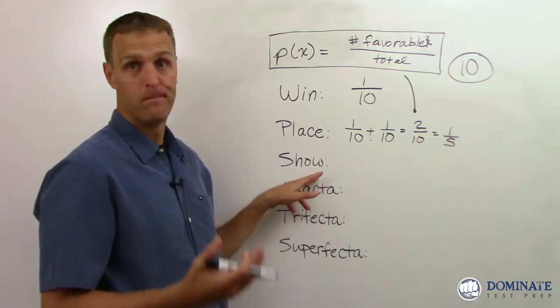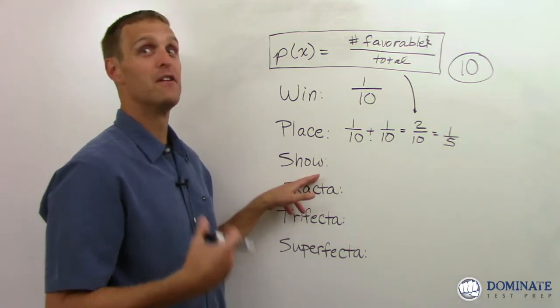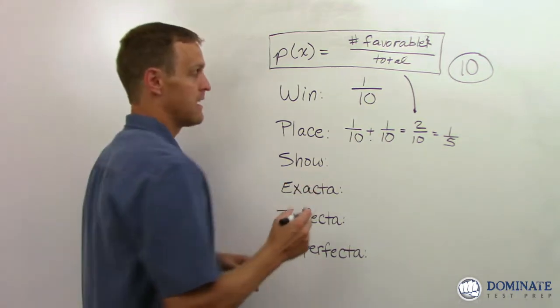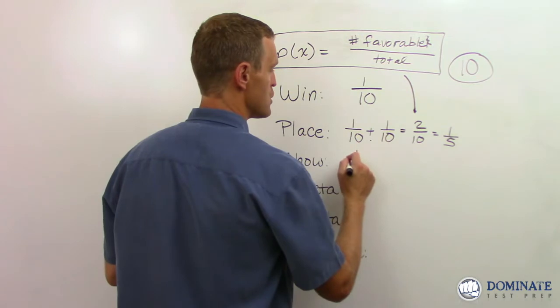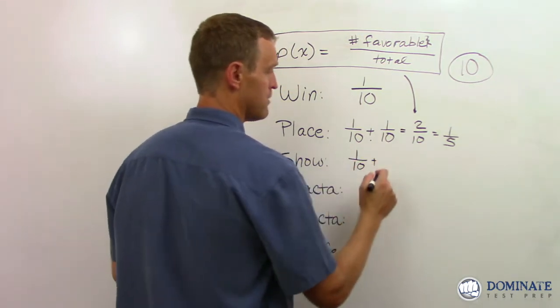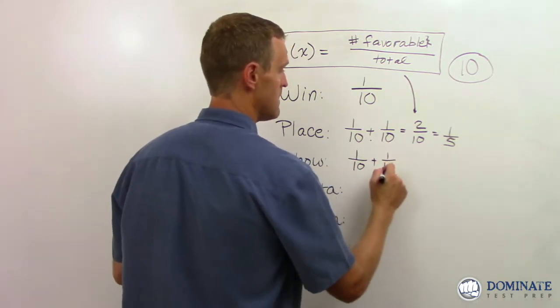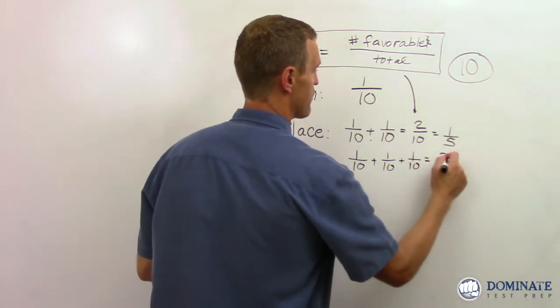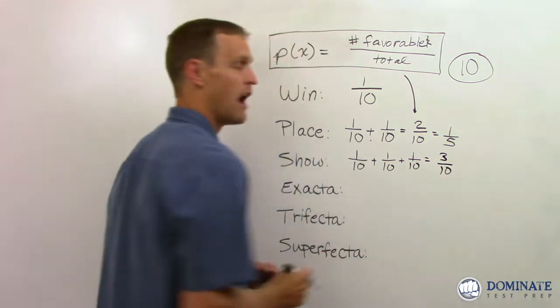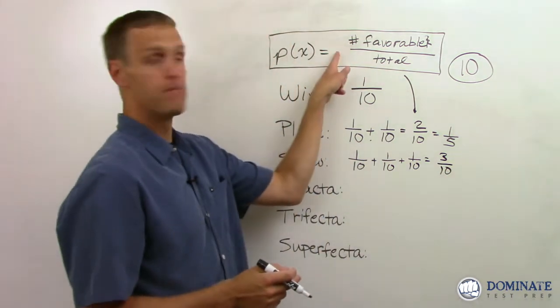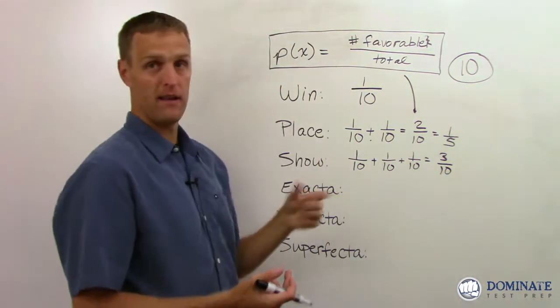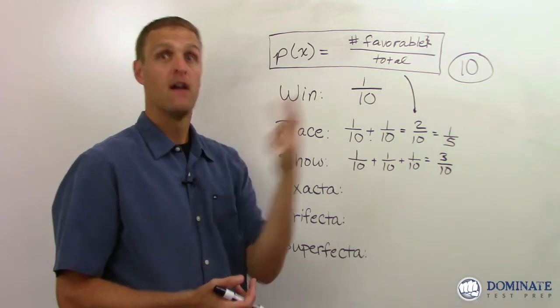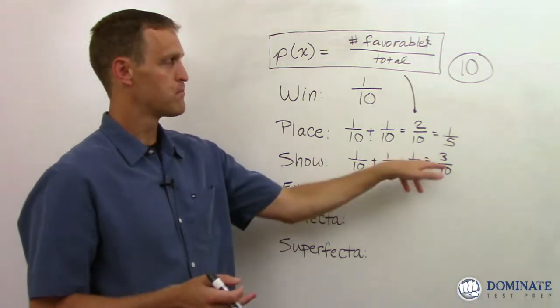How about to show? Show is even better odds for you because it is a bet that the horse you pick will either finish first or finish second or finish third. So now we have a three out of 10 chance of that happening. And again, basic rule of probability, three favorable outcomes, first, second, or third out of 10 total horses. So pretty good odds.